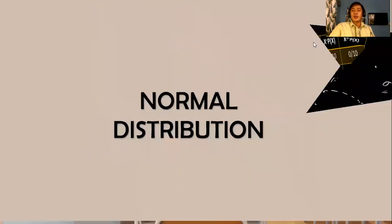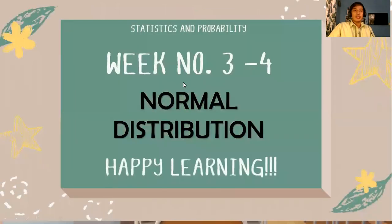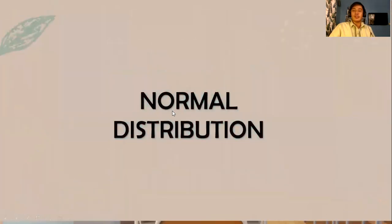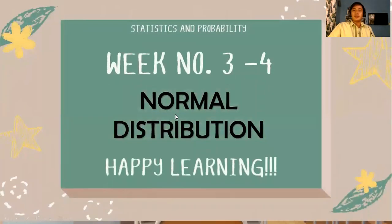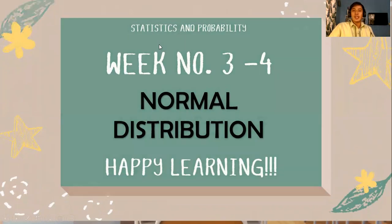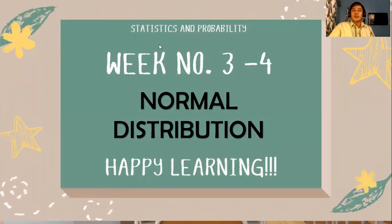We are now done with week number two. For weeks three and four, we will be talking about a type of continuous probability distribution called the normal distribution. Again, this is Sir Peter — thank you.